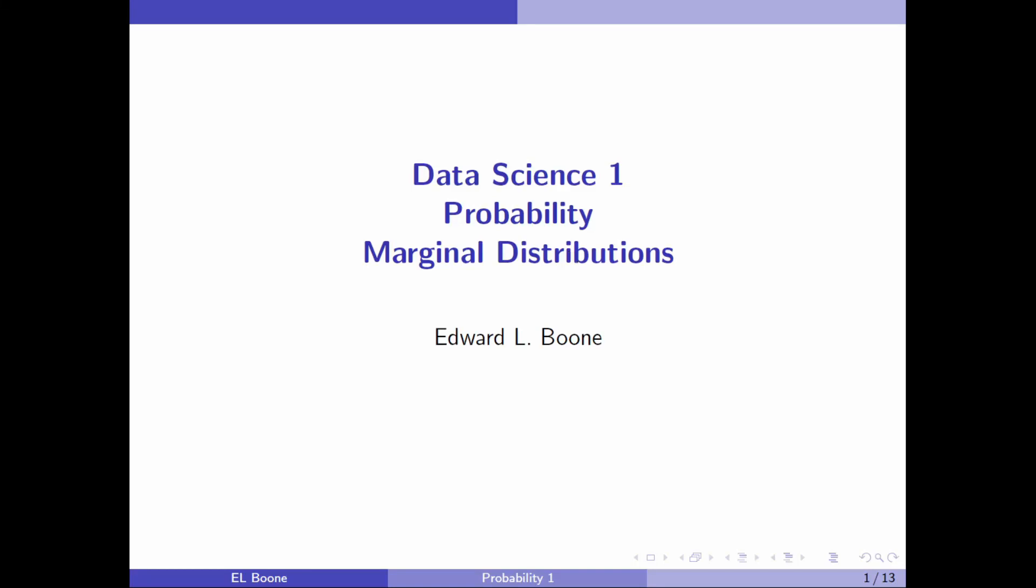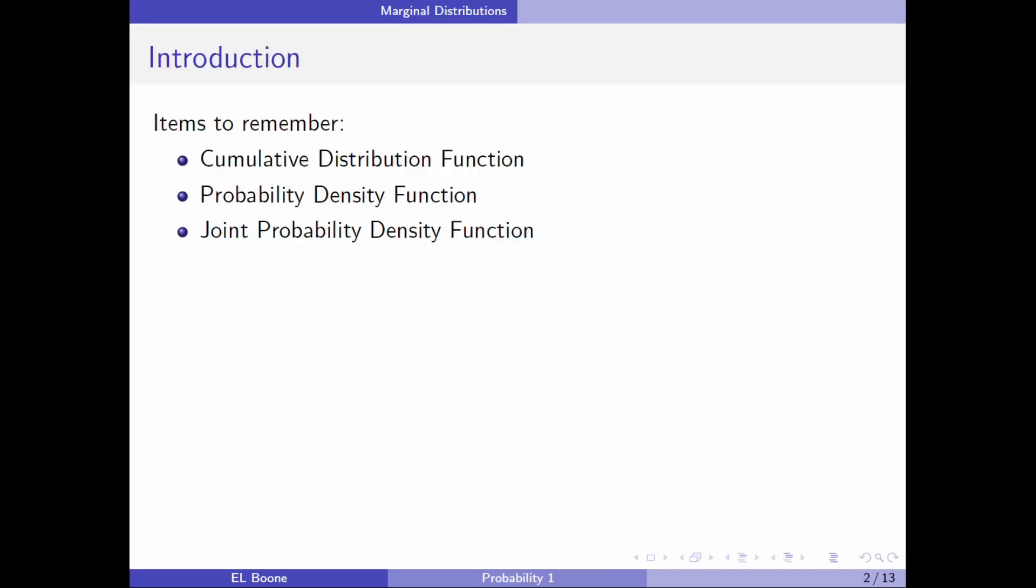Welcome to Data Science 1, probability, marginal distributions. Okay, what are we going to need to know to get through this? We're going to need to know what a cumulative distribution function is, a probability density function, and a joint probability density function.